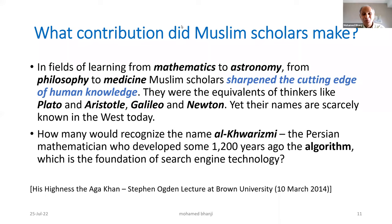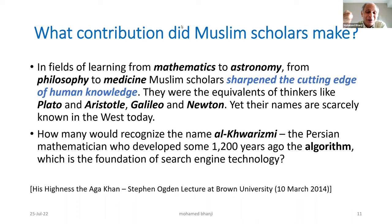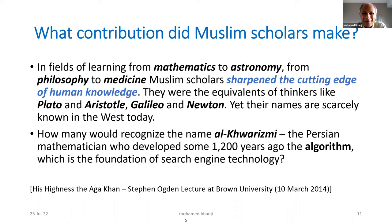Muslim scholars sharpened the cutting edge of human knowledge. They were the equivalents of Plato, Aristotle, Galileo, and Newton, yet their names are scarcely recognized in the West today. Take just one example: Al-Khwarizmi developed the algorithm some 1,200 years ago — the foundation of our search engine technology. Today when you pick up your smartphone and go to Google to search for anything, the underlying technology was developed by Al-Khwarizmi. Just think what would have happened if he had patented his technology.